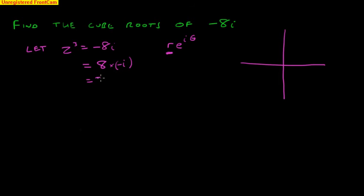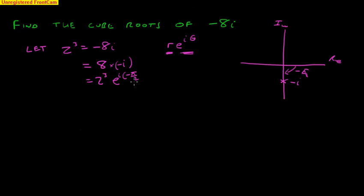Let's write that 8 as 2 cubed because we're dealing with cube things here. Now negative i, we're going to write in the form e^(iθ). Let's just look where it is. We've got the real axis and the imaginary axis. Negative i is here. So the angle that we've gone through to there is negative π/2 — negative because we're coming this way. So what we've got here is e^(i·(−π/2)). We could keep going round and round, so I'll just put plus 2nπ on the end of that.